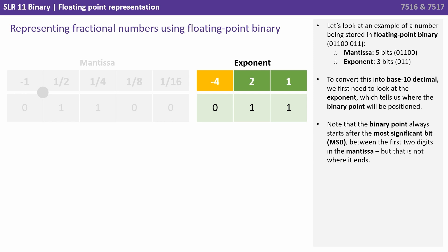To convert this into base 10 decimal, we first need to look at the exponent, which tells us where the binary point will be positioned. Note that the binary point always starts after the most significant bit, MSB, between the first two digits in the mantissa, but that is not where it ends.